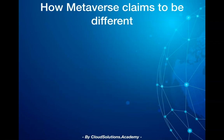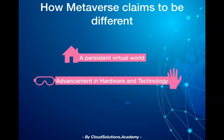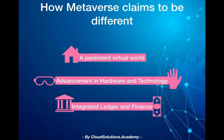So how is metaverse different from existing technologies? Metaverse aims to provide a persistent virtual world representing digital twins of any entity for you and for your environment. Secondly, advancement in hardware and technology will make the metaverse more consumable and scalable. For instance, in the future, instead of using an AR/VR headset, you would use more natural and intuitive ways to communicate with the virtual world. And finally, metaverse would provide an integrated ledger for managing any identity, any digital assets, and currency in the future.